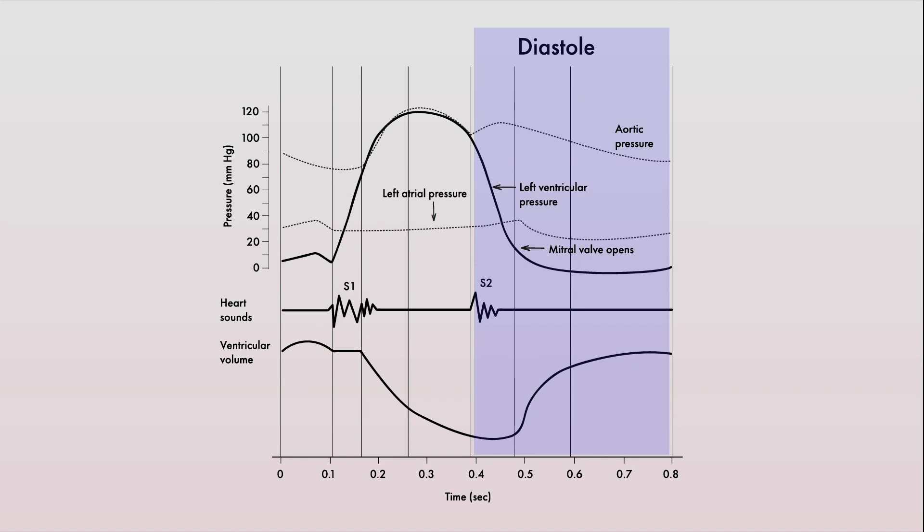And diastole is when the semilunar valves close and the atrioventricular valves open and is when the ventricles relax after contracting and fill with blood. Think of this as the time when the heart is preparing for the next cardiac cycle.